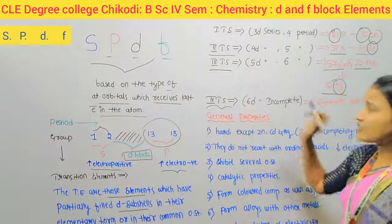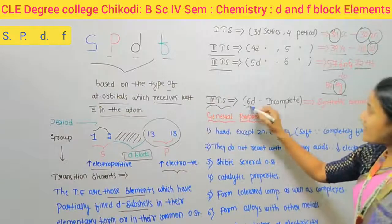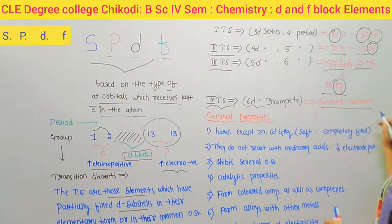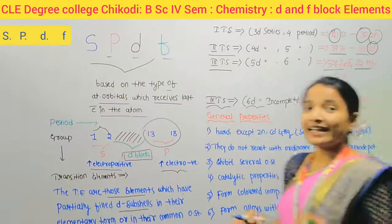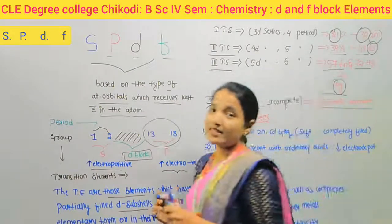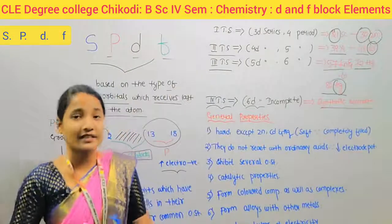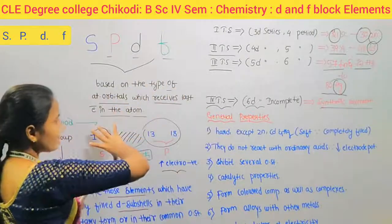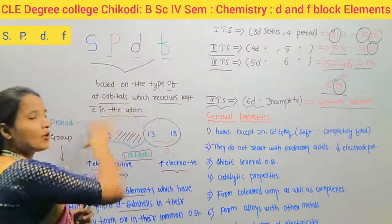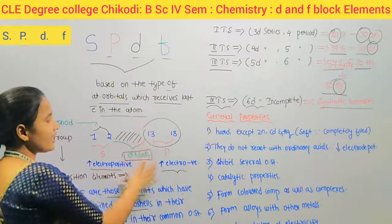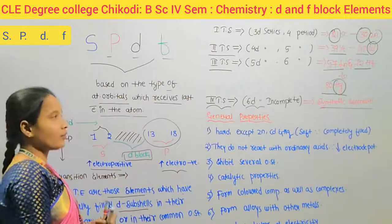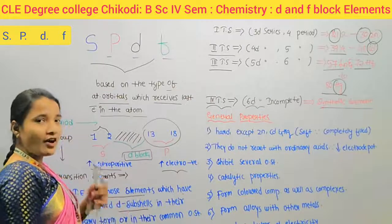The fourth transition series is the 6D series. It is incomplete and consists almost entirely of synthetic elements.